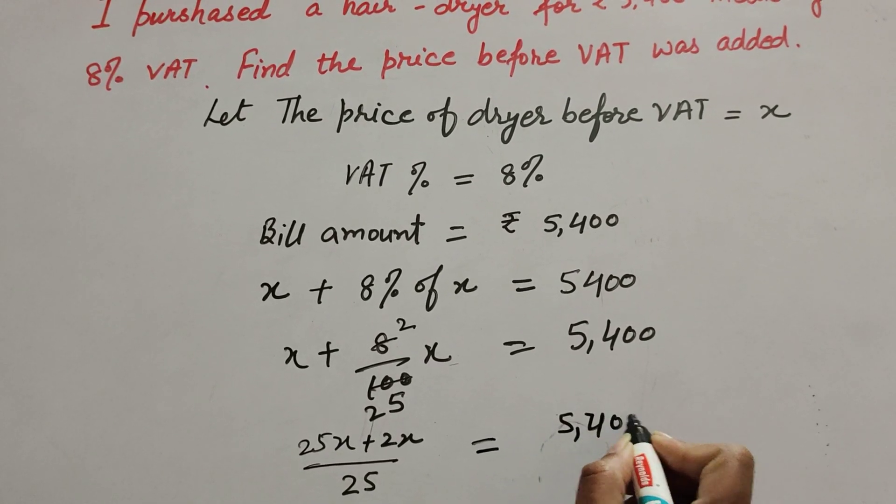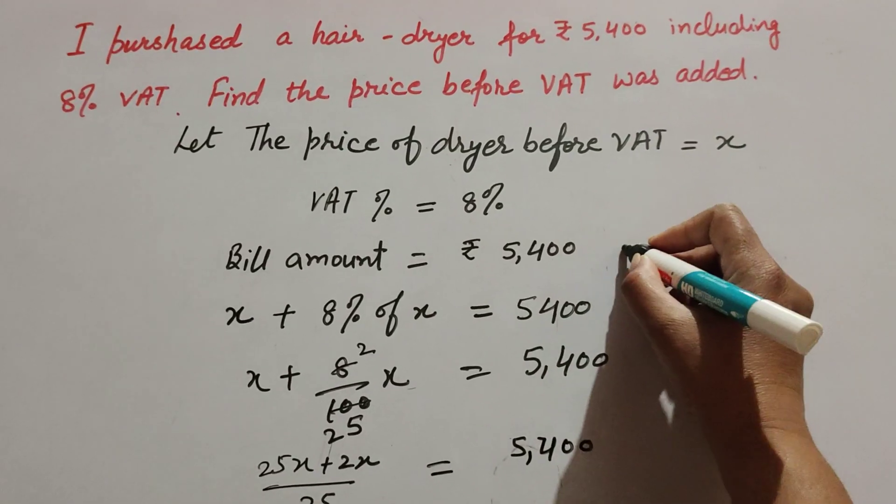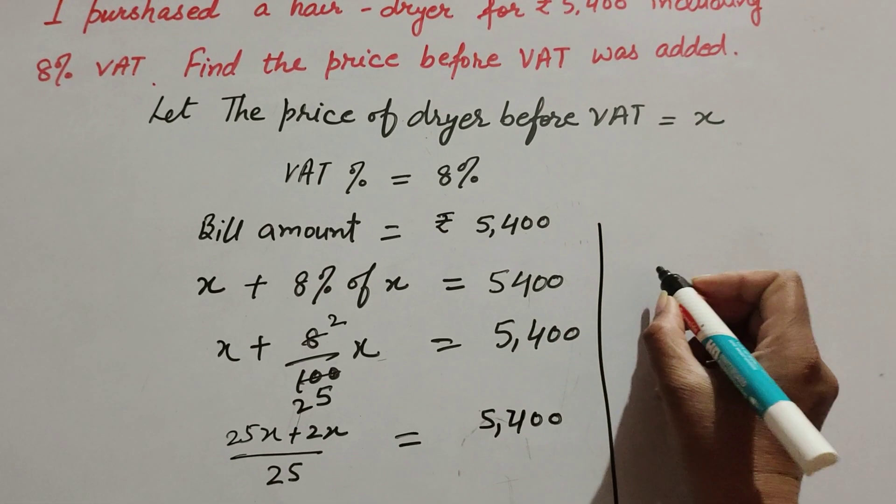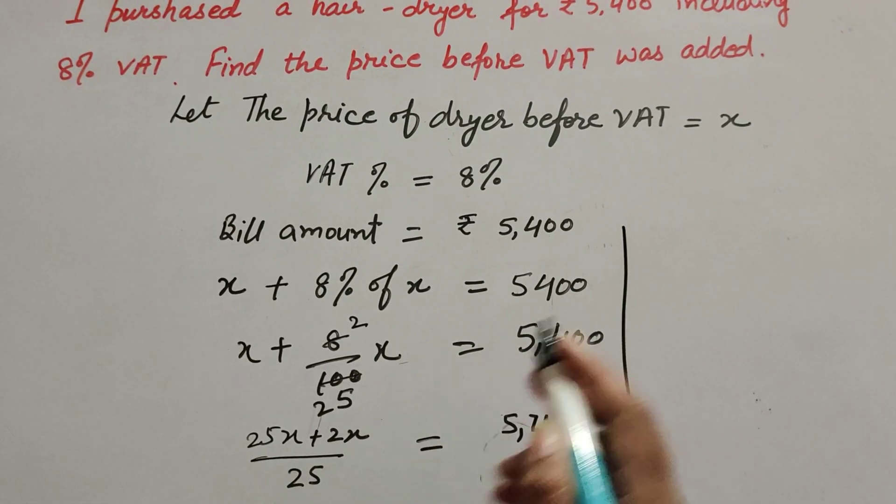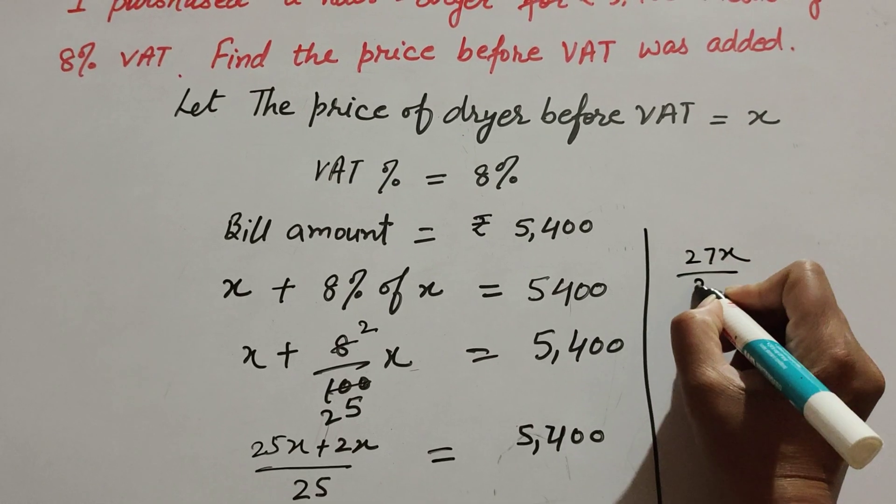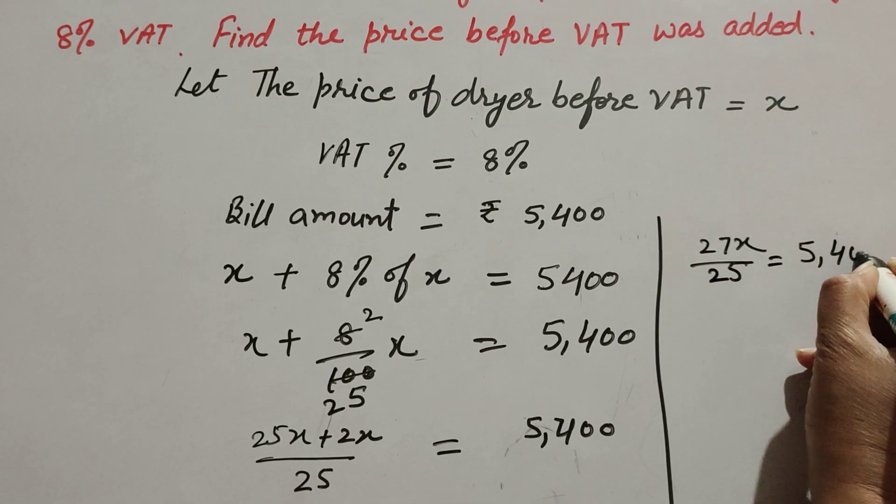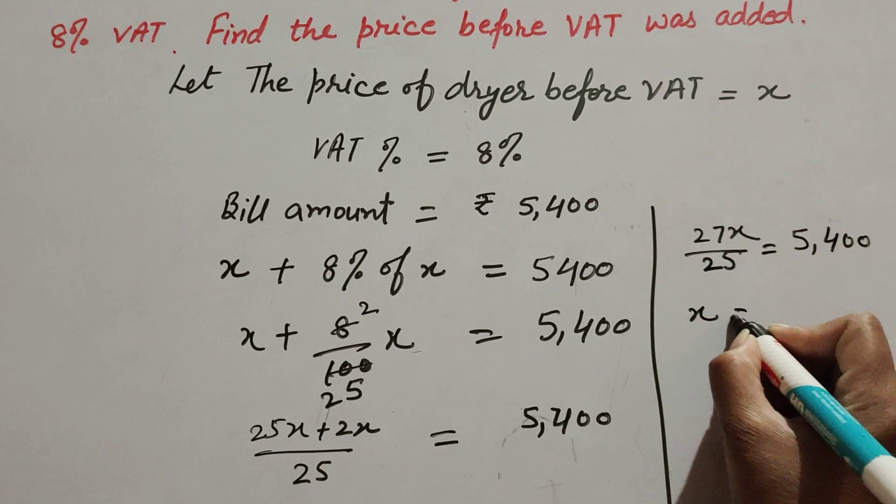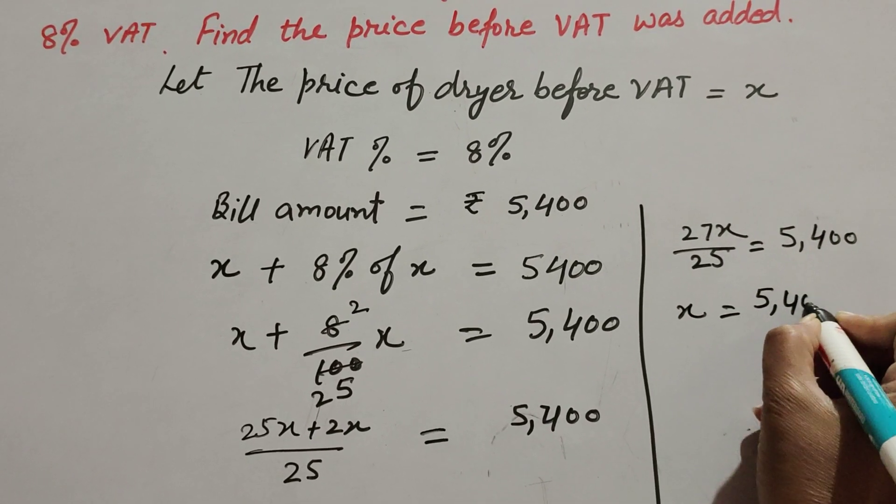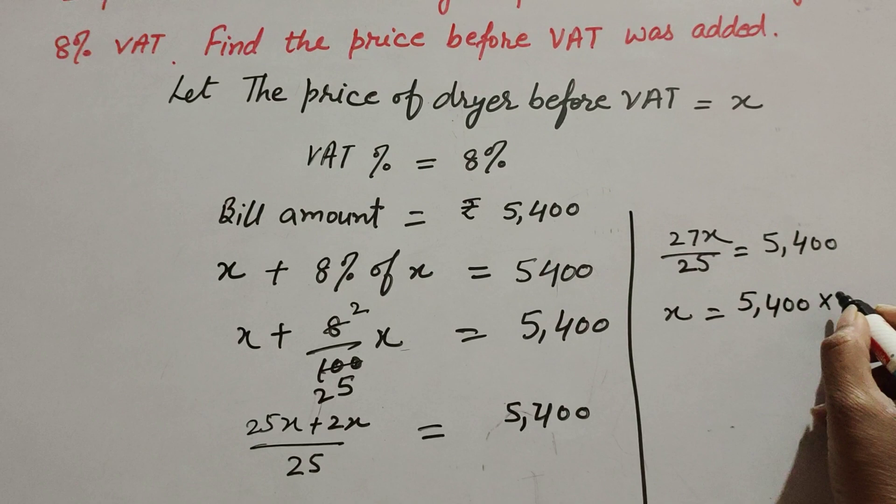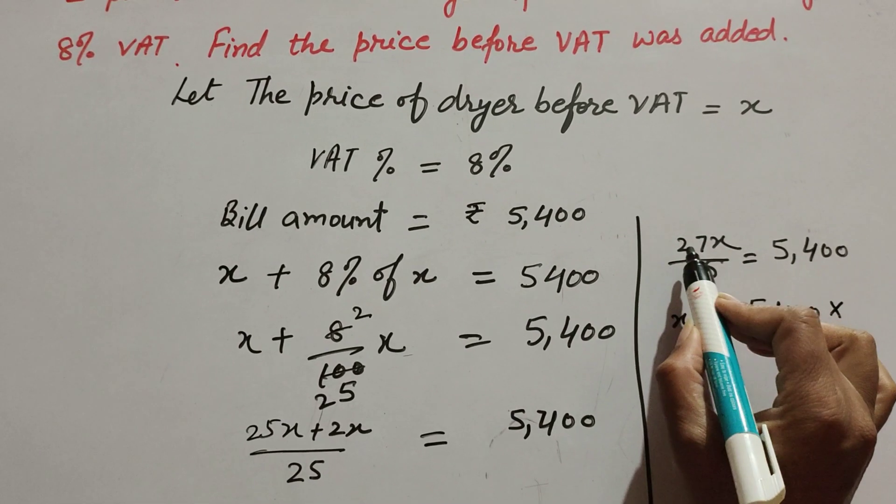Therefore, 27x = 5,400 × 25. Transposing to the right-hand side, x = 5,400 multiplied by the reciprocal 25/27.